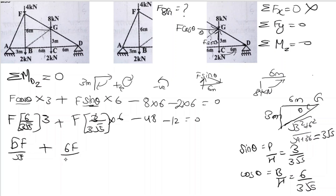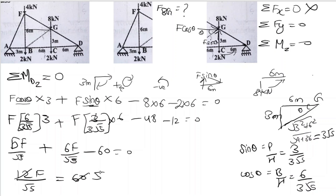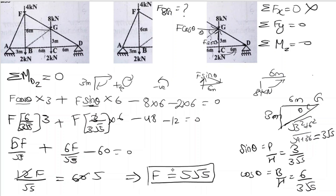Simplifying: minus 48 plus 12 equals 60 equals zero. So 12F upon root 5 equals 60, which gives F equals 5 root 5. This is the magnitude of the force in member BG: F = 5 root 5.